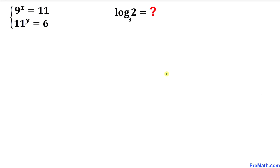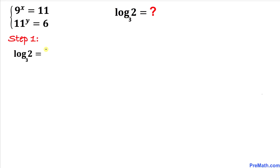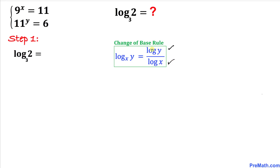Let's get started with the solution. Let's focus on log of 2 with base 3. We recall the change of base formula and apply it: log base 3 of 2 can be written as log of 2 in the numerator divided by log of 3 in the denominator.